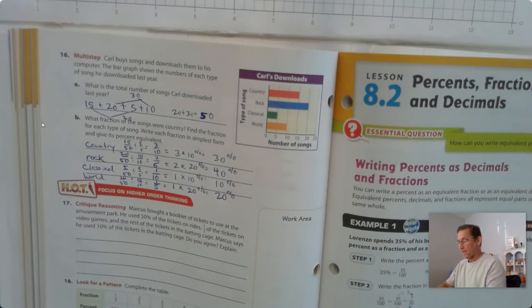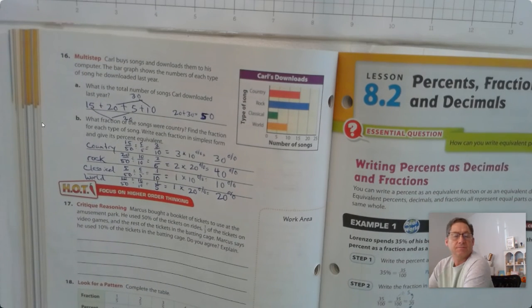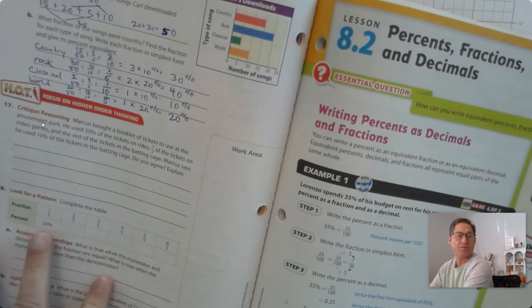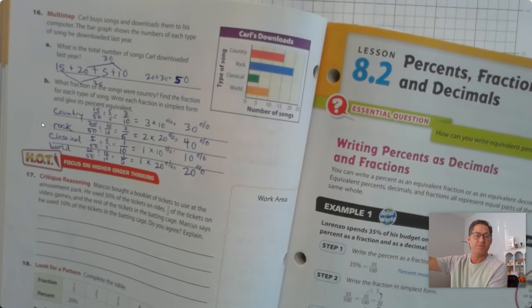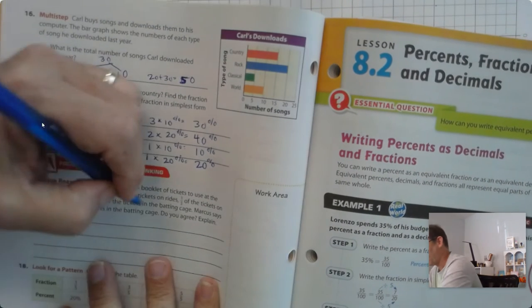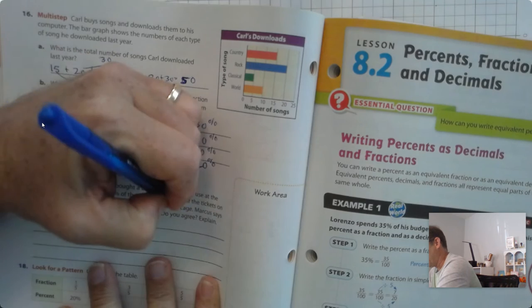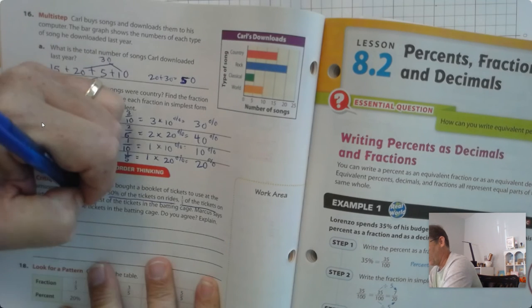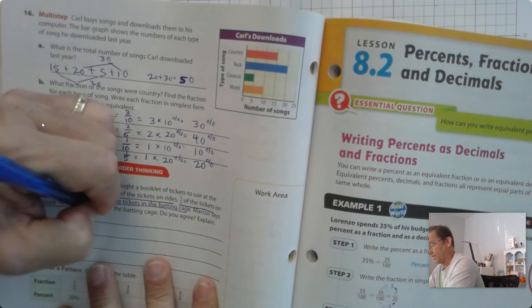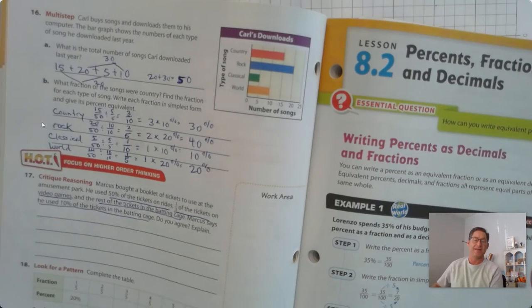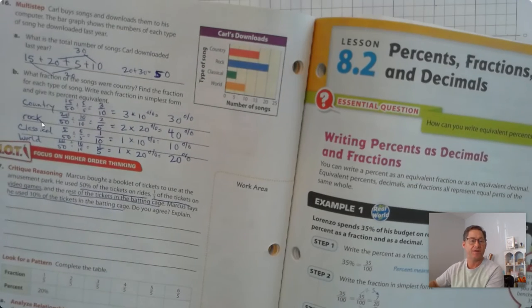Number 17. Marcus bought a booklet of tickets to use at the amusement park. He used 50% of the tickets on rides, a third of the tickets on video games, and the rest of the tickets in the batting cage. He says he used 10% of the tickets in the batting cage. Do you agree? And explain. Well, let's see.